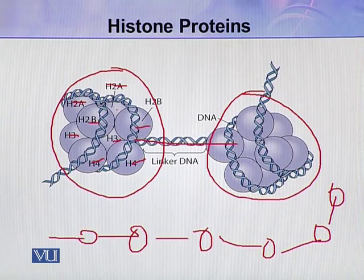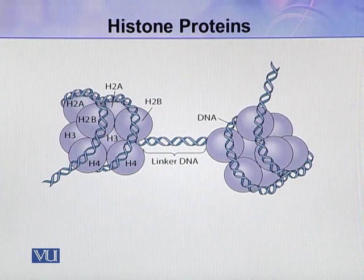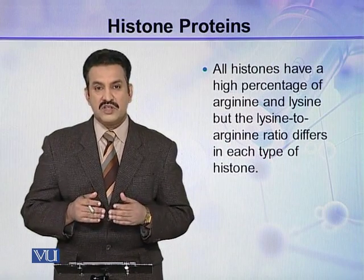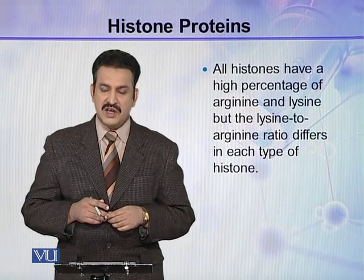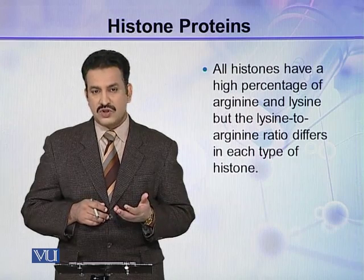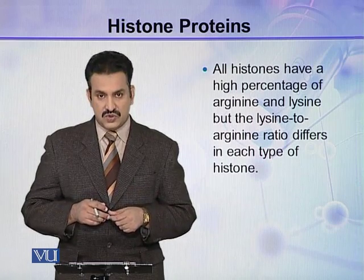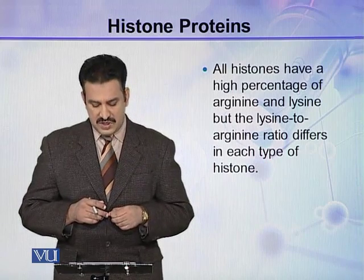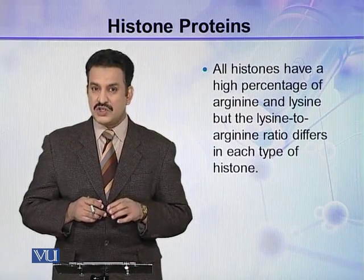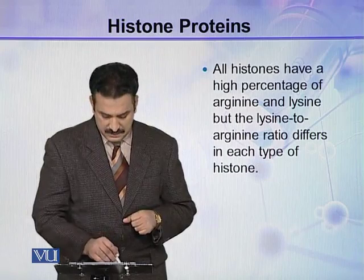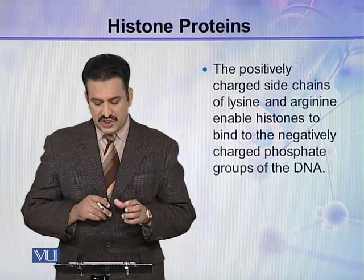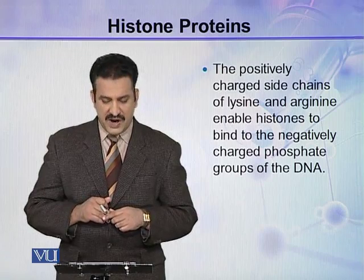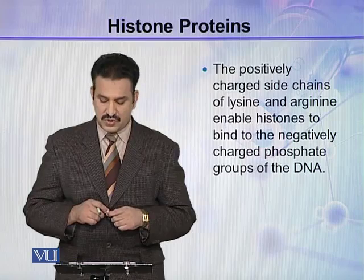This is the organization of chromatin in the eukaryotic chromosome. All the histones have a high percentage of arginine and lysine. Both these amino acids — arginine and lysine — are positively charged amino acids. All the histones have a high proportion of these two positively charged amino acids, but the lysine to arginine ratio in each type of histone is variable. The positively charged side chains of lysine and arginine enable the histones to bind to the negatively charged phosphate groups of the DNA.